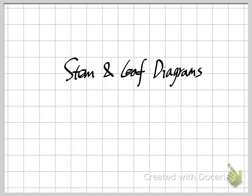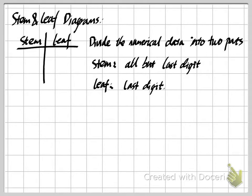About the stem and leaf diagram: if we have some data, we will divide our numerical data into two parts. The first part we call the stem, which includes all the digits of the data except the last digit. The leaf is about the last digit. So if our data has only one digit — for example, 1, 2, 3, 4 — the last digit is those numbers, and our stem will all be zero.